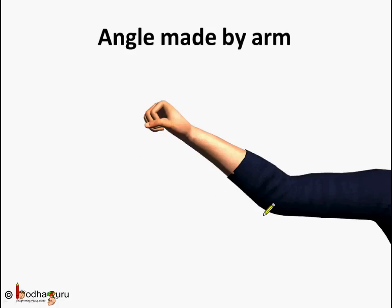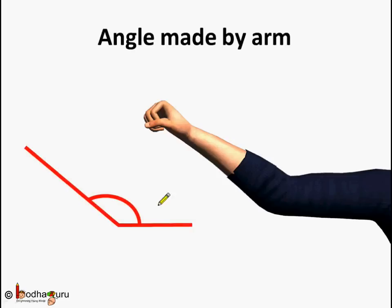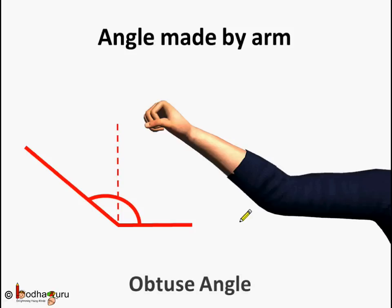Now let us see this position. The angle at the elbow point is definitely greater than 90 degrees but also less than 180 degrees. This type of angle, which is greater than 90 degrees and less than 180 degrees, is called an obtuse angle. So the hands at this position make an obtuse angle at the elbow joint.